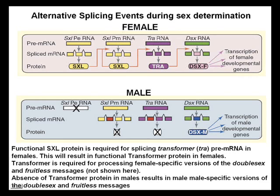Shown in this slide are the active splicing events during sex determination in both male and female. In females, sex lethal is spliced in the female manner; it regulates its own splicing, then regulates the splicing of transformer, which regulates the splicing of double sex. Double sex then regulates the transcription of female development genes. In males, there is no early sex lethal; the late sex lethal is non-functional. Transformer is not expressed because there is no functional SXL to regulate its splicing, and double sex is expressed only as a truncated form through male alternative splicing, resulting in transcription of male development genes.